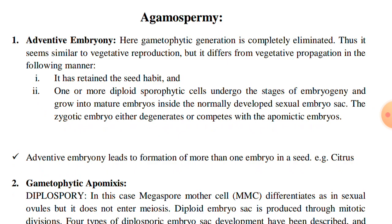Agamospermy — number one, adventitious embryony. Here, the gametophytic generation is completely eliminated. Thus it seems similar to vegetative reproduction, but it differs from vegetative propagation in the following manner.